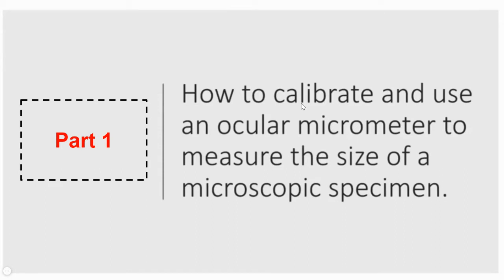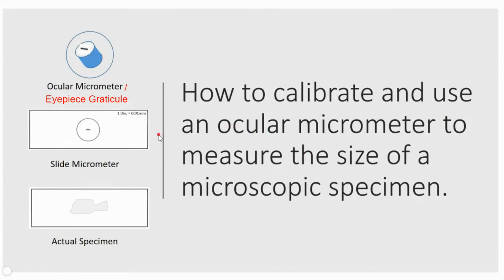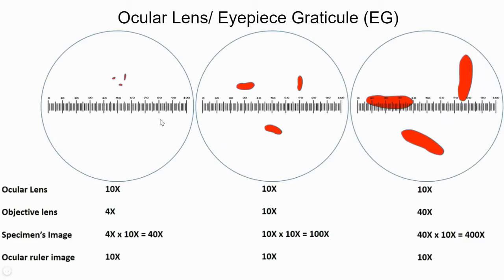Now let's understand how to use this ocular micrometer to actually measure the size of microscopic specimens — that's our main objective. We know how an ocular micrometer looks and how a stage micrometer looks. Remember, in your syllabus the ocular micrometer will be called eyepiece graticule. We are now going to look deeper into how this eyepiece graticule helps in measuring the size of a cell.